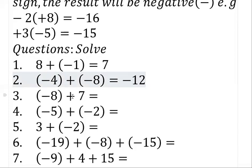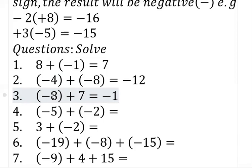If you are adding numbers of different signs, you subtract them and take the sign of the largest number. Eight minus seven gives one. The largest number is eight, so you take the sign of the largest number.